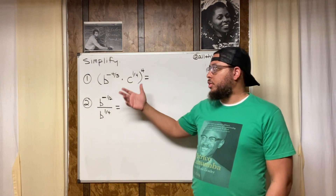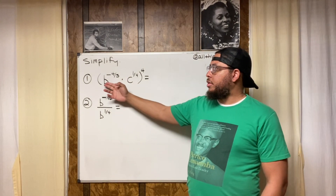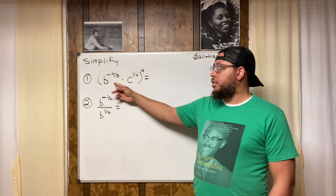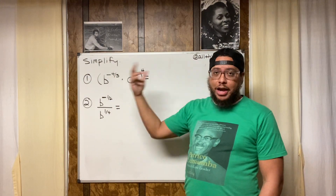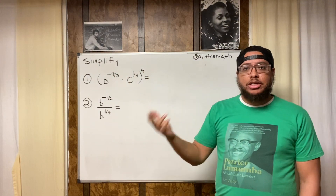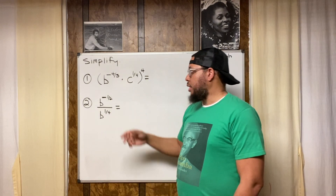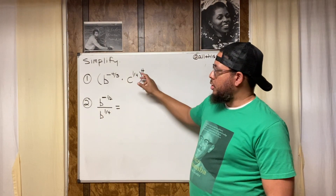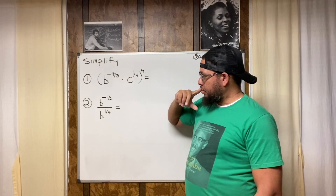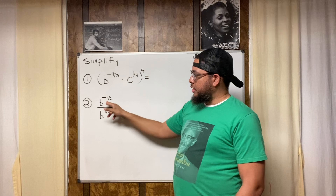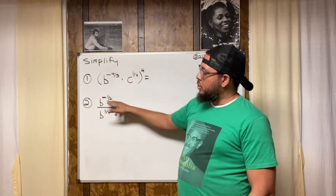Looking at number one, you have b to the negative four-fifths power. Don't get overly concerned because that exponent is a fraction — we call it a rational exponent because a fraction is a rational expression. That whole expression, times c to the one-fourth, is all raised to the fourth power. For number two, we have b to the negative one-half power divided by b to the one-fourth power.